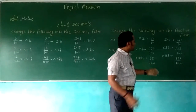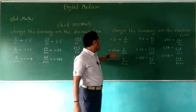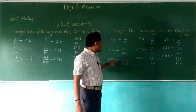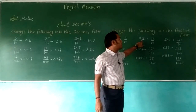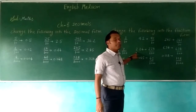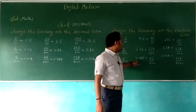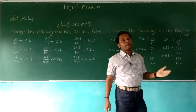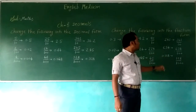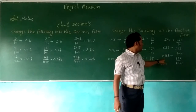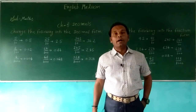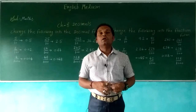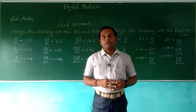So the steps are: 0.3 is 3 by 10, 0.07 is 7 by 100, 0.005 is 5 by 1000, 9.2 is 92 by 10, 2.24 is 224 by 100, 0.045 is 45 by 1000, 24.1 is 241 by 10, 6.34 is 634 by 100, and 0.118 is 118 by 1000. So these ways we can change fraction form into decimal form and decimal form into fraction form. I hope you understand this well. Thank you, bye.